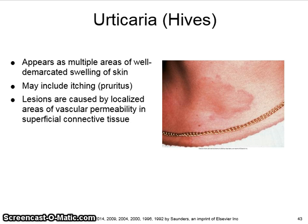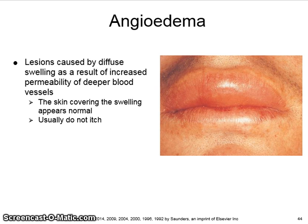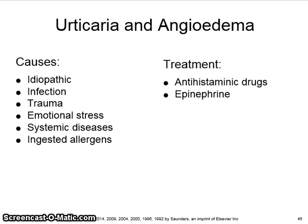Urticaria, also known as hives, appears as multiple areas of well-demarcated swelling of the skin and may include itching, also known as pruritus. Lesions are caused by localized areas of vascular permeability in superficial connective tissue. Angioedema lesions are caused by diffuse swelling as a result of increased permeability of deeper blood vessels. The skin covering the swelling appears normal and they usually do not itch. Causes of urticaria and angioedema could be idiopathic, infection, trauma, emotional stress, systemic diseases, or ingested allergens, and treatment could involve antihistaminic drugs or epinephrine.